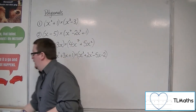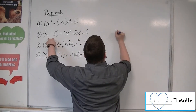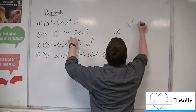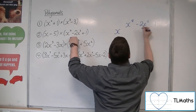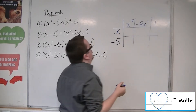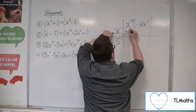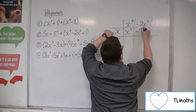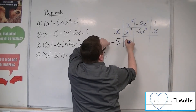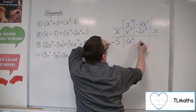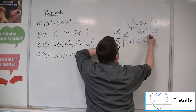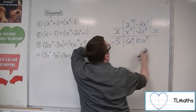Let's have a look at the second one. We've got x minus 5, and x to the 4 minus 2x cubed and plus 1. So we've got x times x to the 4 is x to the 5. x times minus 2x cubed is minus 2x to the 4. 1 times x is x. x to the 4 times minus 5 is minus 5x to the 4. Minus 5 times minus 2x cubed is plus 10x cubed. And minus 5 times 1 is minus 5.